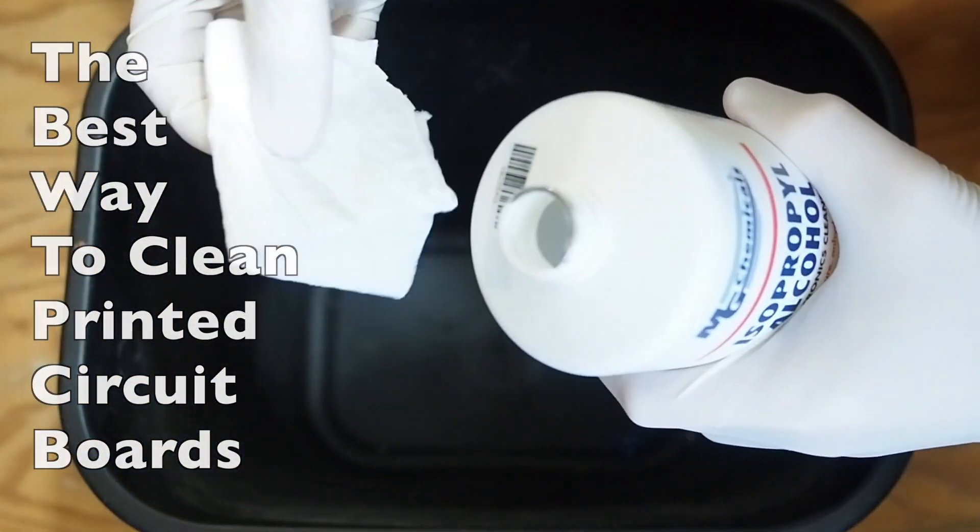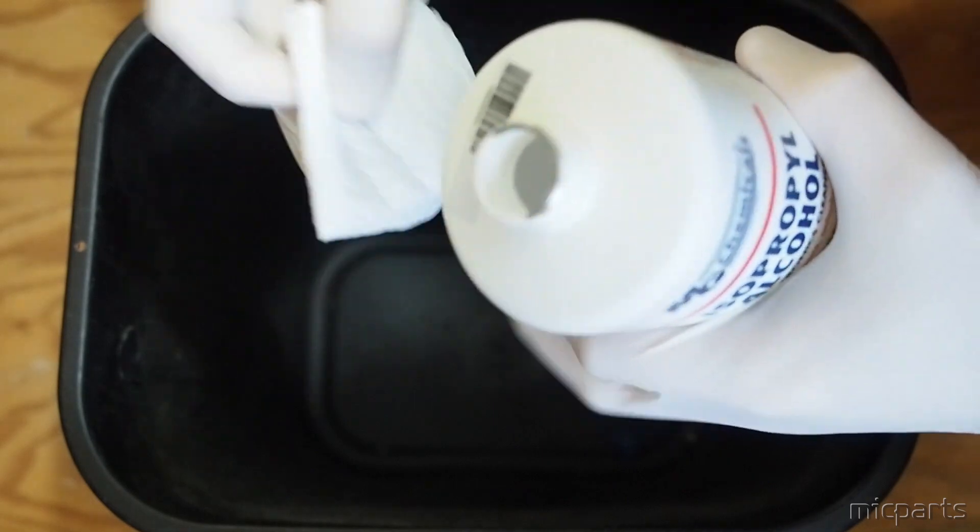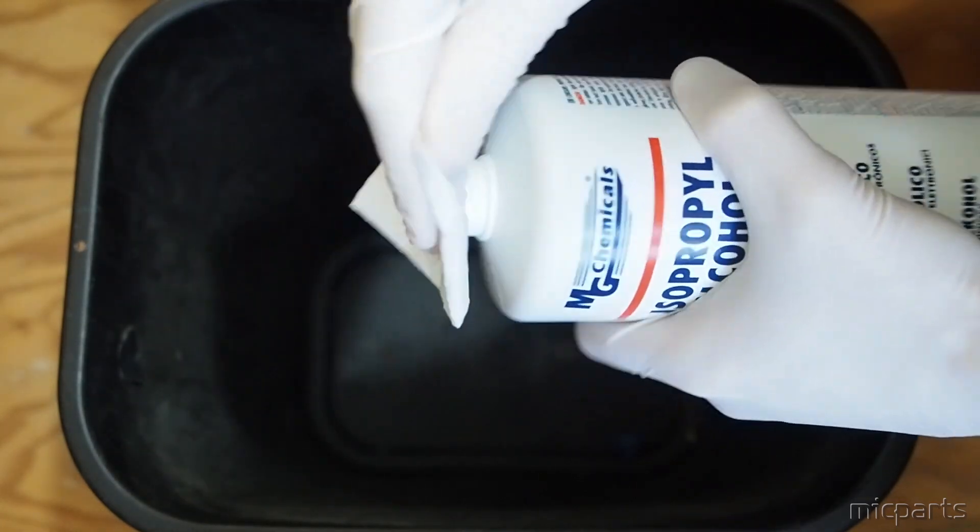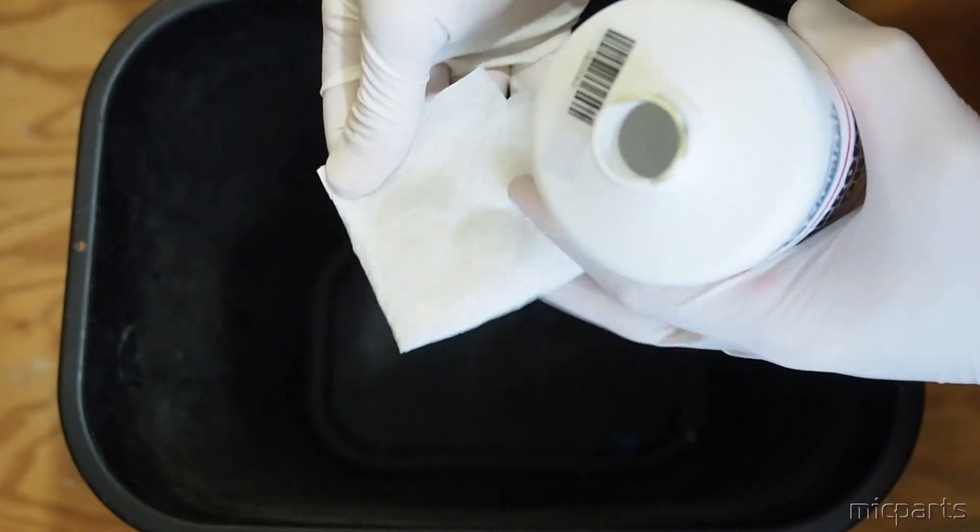This video demonstrates our preferred way of cleaning flux residue and oils off of a circuit board after soldering. It needs only three ingredients.